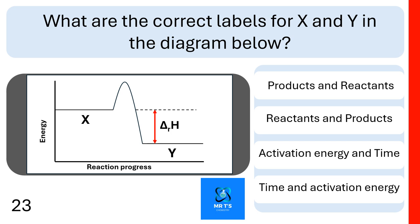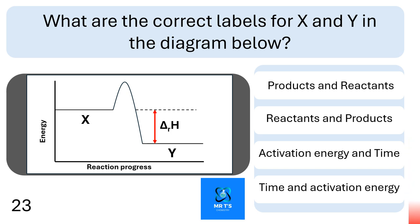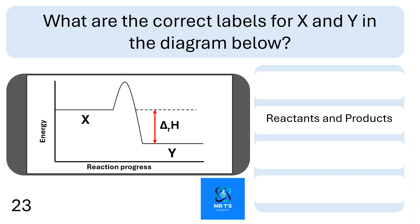Question twenty-three: what are the correct labels for X and Y in this energy diagram? Are they products and reactants, reactants and products, activation energy and time, or time and activation energy? The missing labels are X: reactants and Y: products.